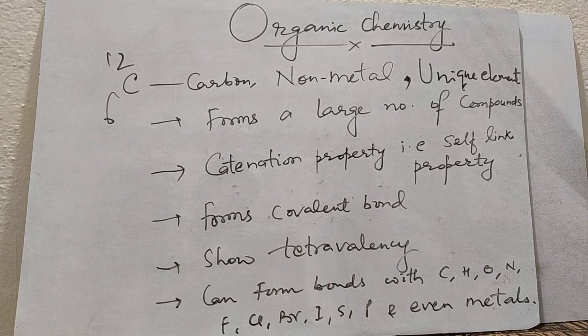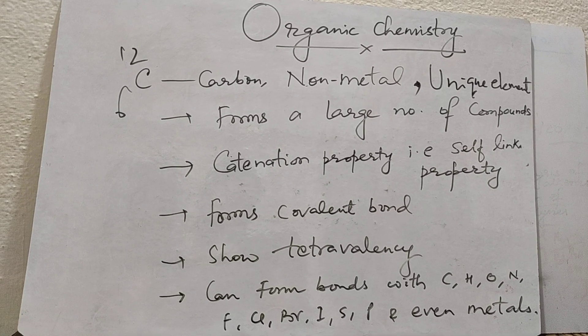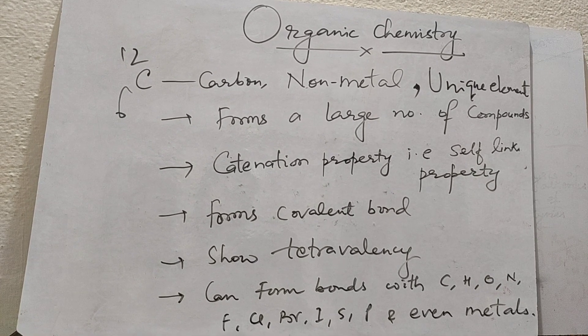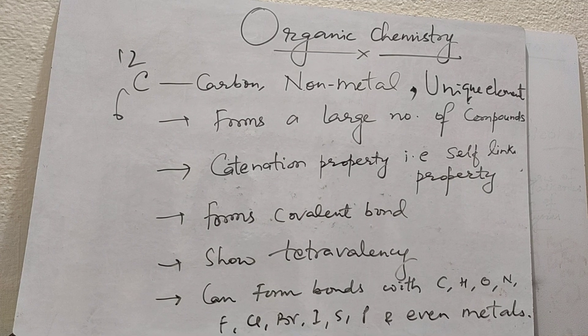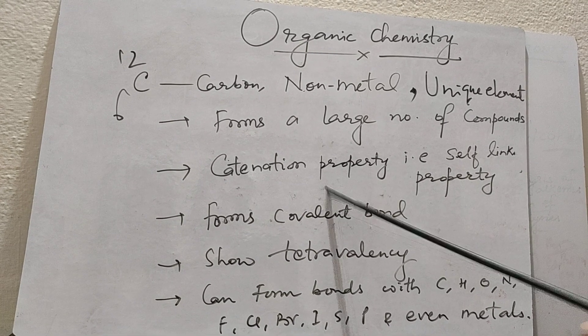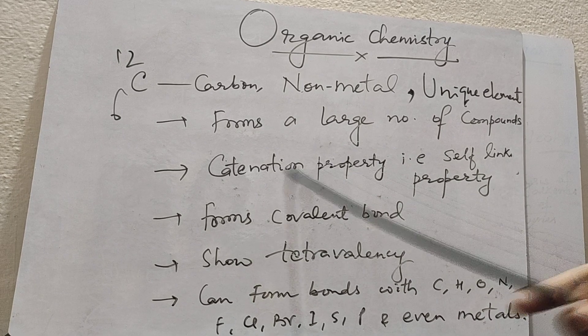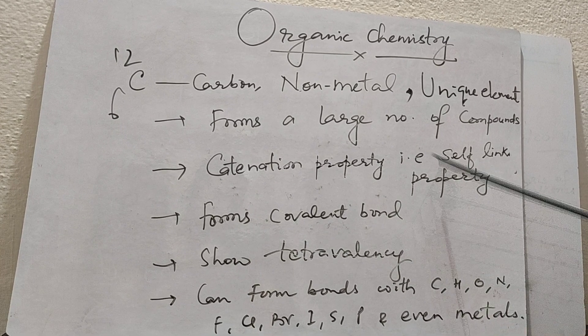It forms a covalent bond. Covalent bond means it is the bond formed by sharing of electrons. Since carbon is unable to form C4+ and C4-, it resorts to sharing of electrons. That is why it forms covalent bonds.